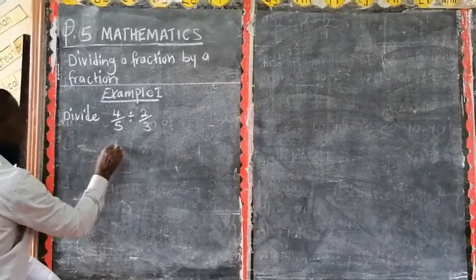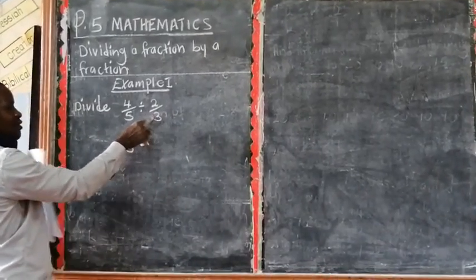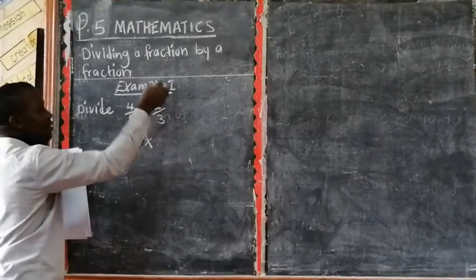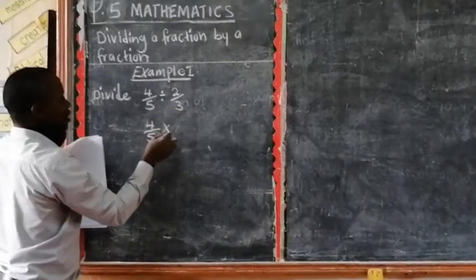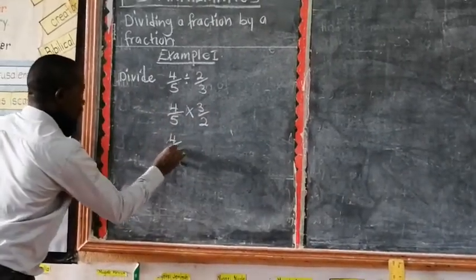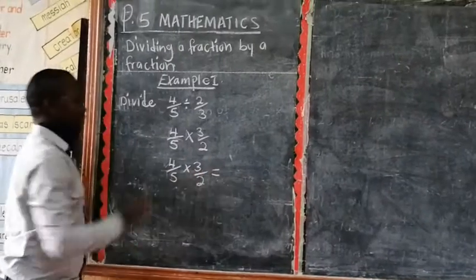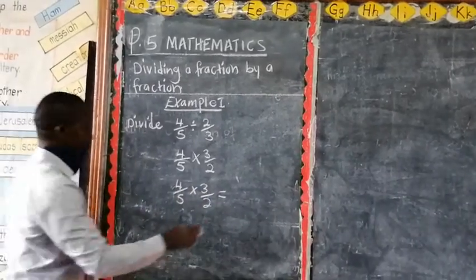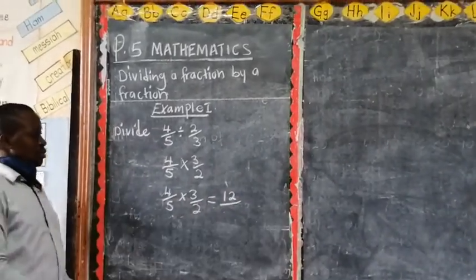Therefore, this one we have 4 out of 5 times it. The reciprocal of this fraction, remember we said that when we say reciprocal, the number which is down, the denominator, goes up and the numerator comes down. Therefore, this 3 is going up, this 2 is coming down. So we have 3 out of 2. Once we have 4 out of 5 times 3 out of 2, now here we just multiply. 4 times 3, we get 12. 5 times 2, it is 10.